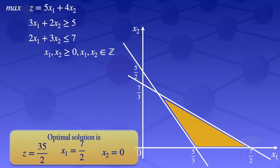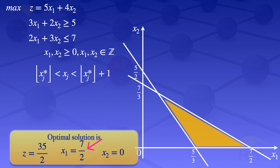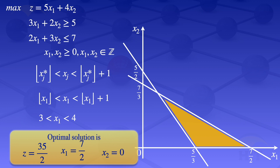The branch and bound method says that if the variables are not integer, we exclude the region using the floor formula. The non-integer variable here is x1, which equals 7/2. The floor value of x1 is 3, and floor value plus 1 gives 4. So we exclude the region between 3 and 4. I write 3 on the horizontal axis, draw the line x1 equals 3, label 4 on the graph, and draw the line x1 equals 4.